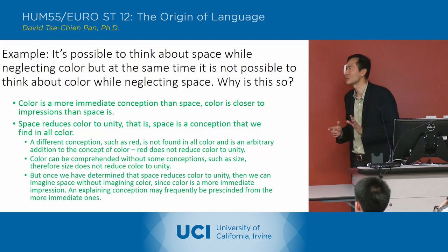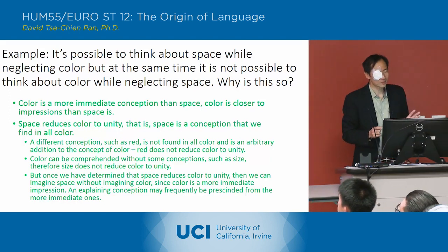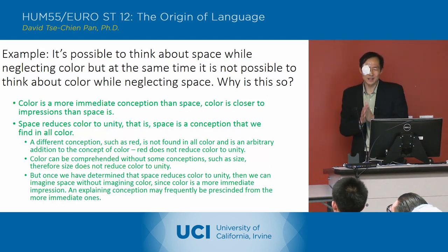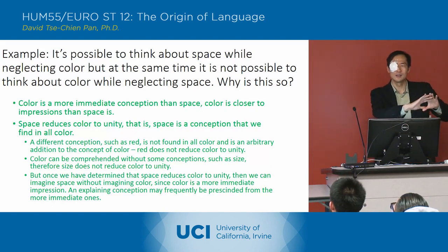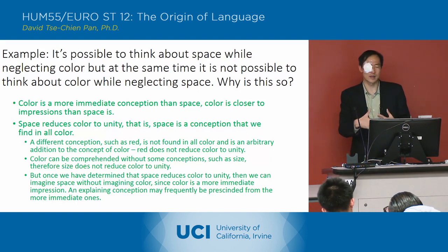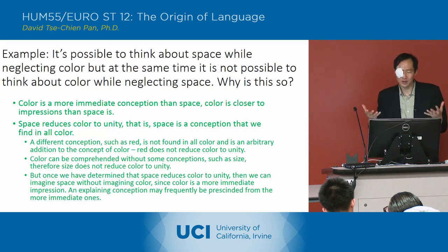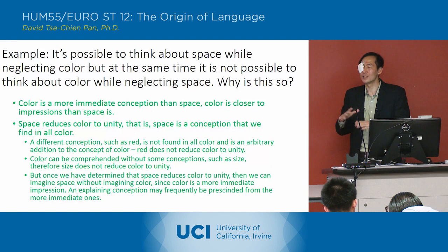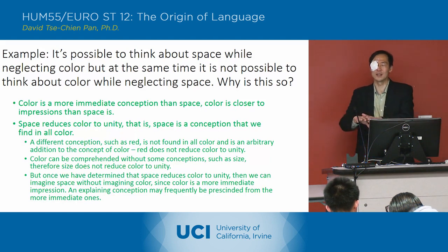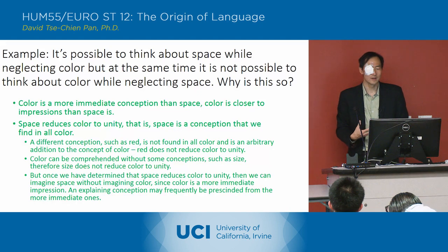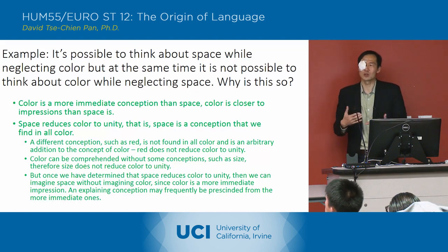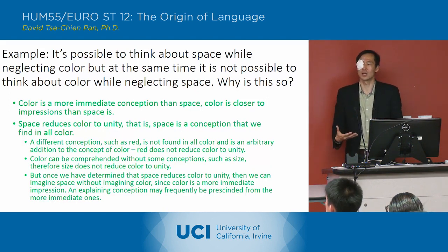So that's the key concept of precision. What he's indicating now is that color is a more immediate conception than space — it's closer to the impressions. That's why you can prescind space from color: because space reduces color to a unity. Space is a conception we can find in all color, and so it unifies all color within it.